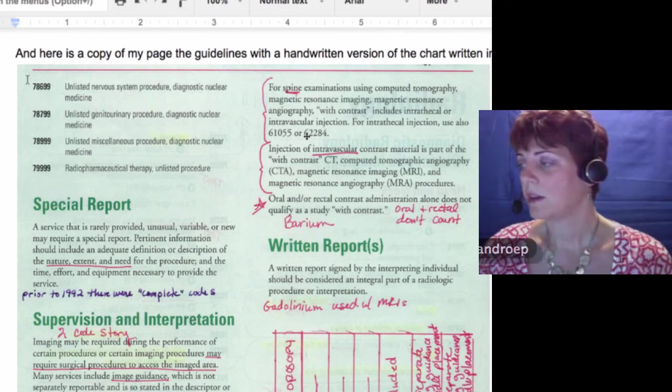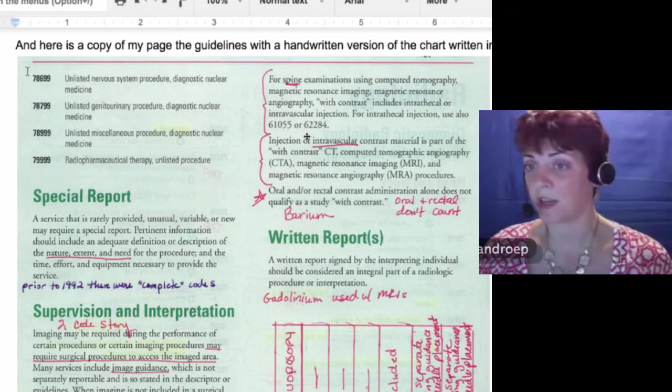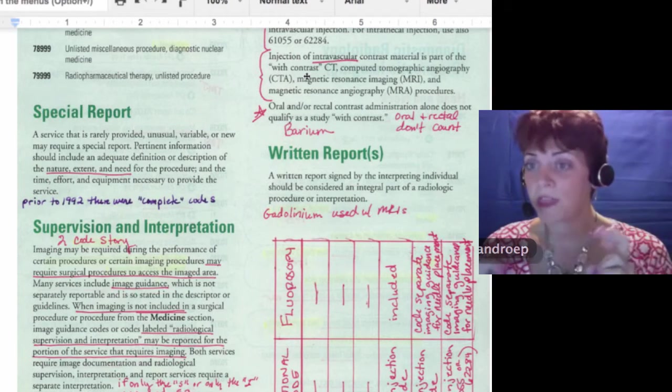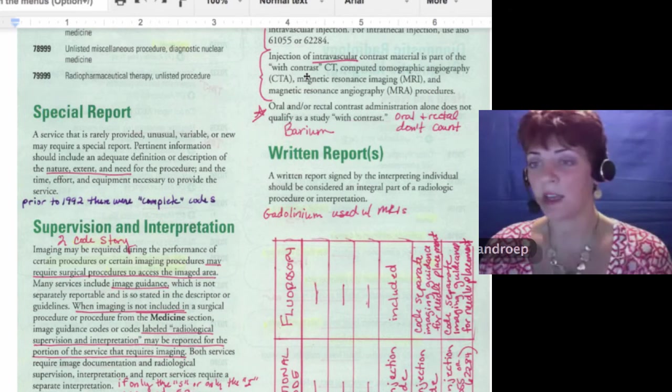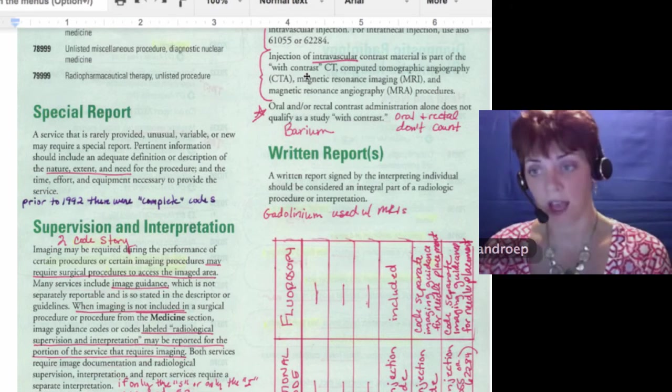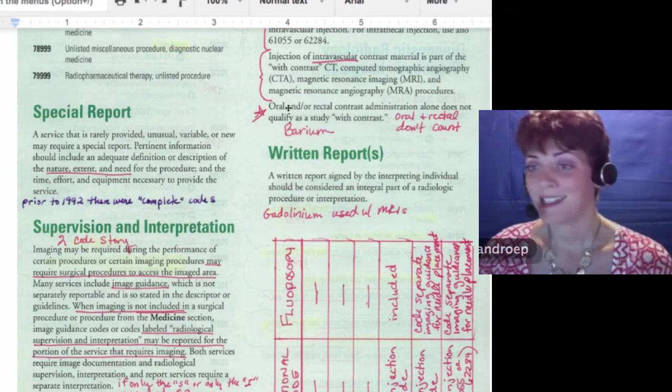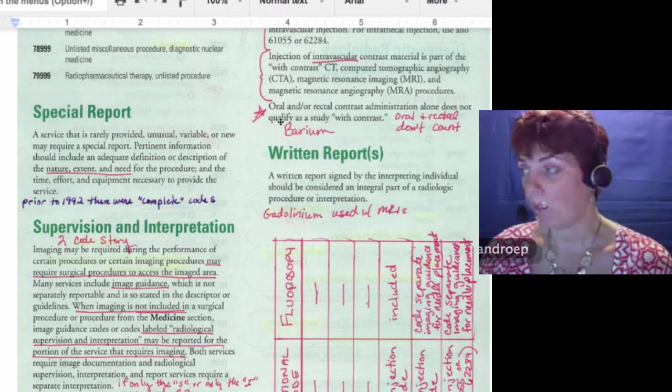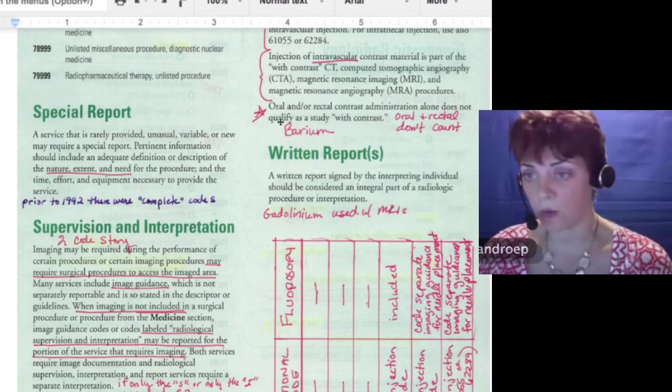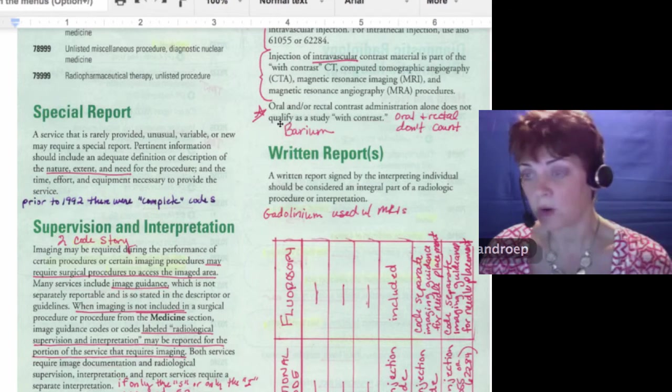And then the next paragraph says injection of intravascular contrast, that's vein or artery, is part of the with contrast. So they're not going to give you any extra codes. They're going to let you use the with indented codes, which has a higher RVU, more pay. The last paragraph, oral and or rectal contrast administration alone does not qualify as a study with contrast for coding purposes.